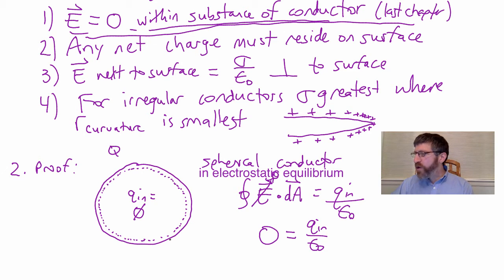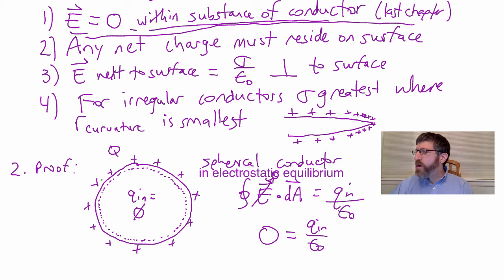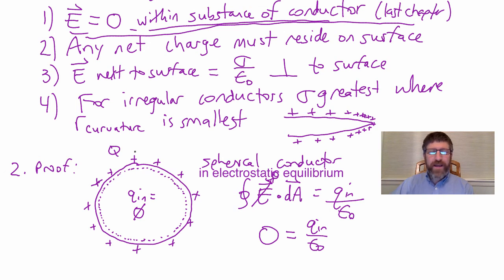All the charge must be outside this Gaussian surface. And because I can create this Gaussian surface arbitrarily close to the edge, any charge that's present has got to be outside that Gaussian surface — on the surface. I've just proved using Gauss's law that any charge must be on the surface, and this is true for any shape because you can create a Gaussian surface of any shape you want.